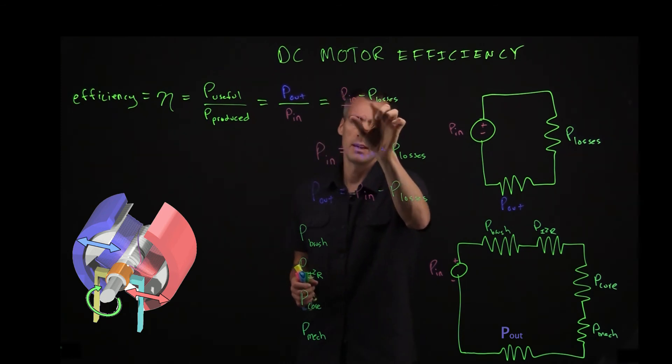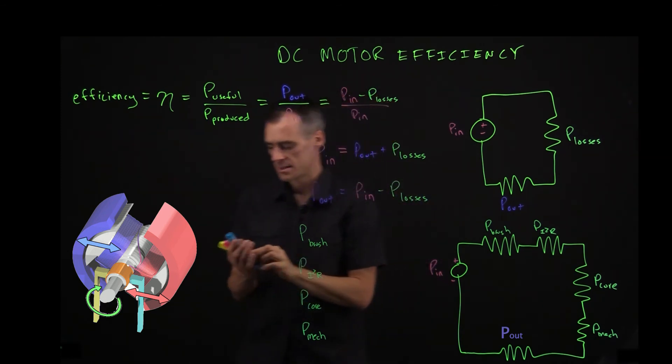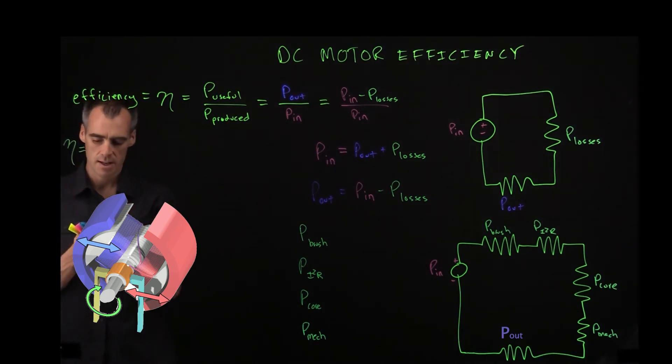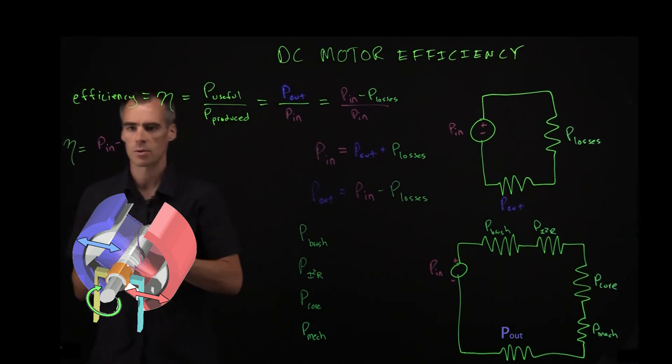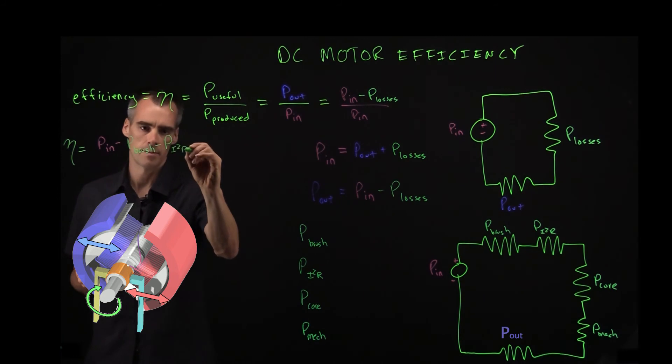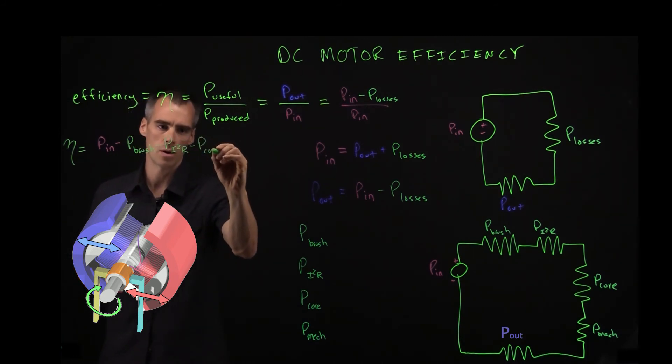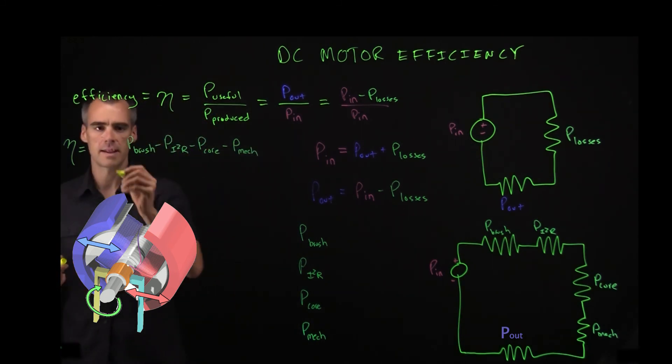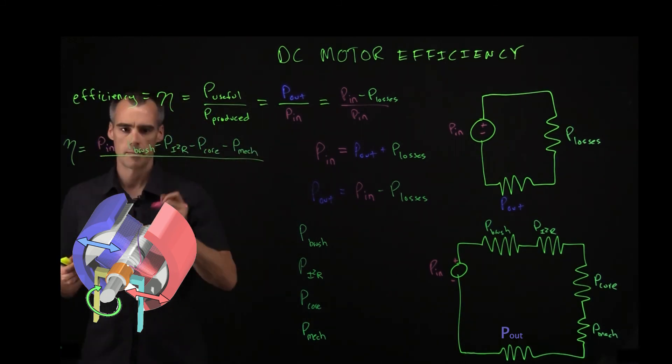So when we have this equation up here, we could elucidate the power losses and say our efficiency, if we wrote it a little bit more detailed, it's going to be still P in on the top. But then we're going to have to subtract each one of these losses. So subtract the loss from the brush, from the I squared R, from the core, and from the mechanical loss. And it's all going to be over P in.